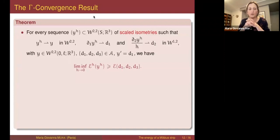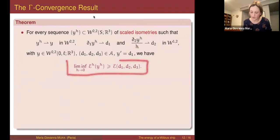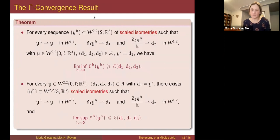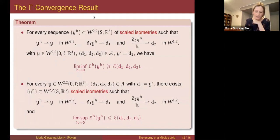This is indeed the Gamma limit — this is the main theorem on Gamma convergence. If we start from a general sequence of scaled isometries converging in the sense given by compactness, we can bound the energies from below by this functional, and conversely this lower bound is optimal: given an admissible frame, we can construct a sequence of scaled isometries on which the lower bound is attained.